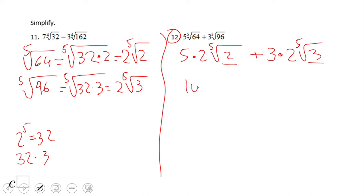5 × 2 is 10, 10 times the fifth root of 2, plus 6 times the fifth root of 3. So you see, it's similar to the previous example where we can do some simplification, but we cannot add these radicals because they are not alike.